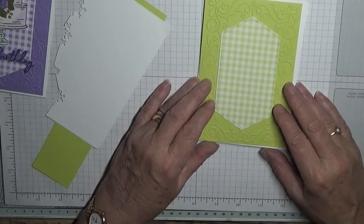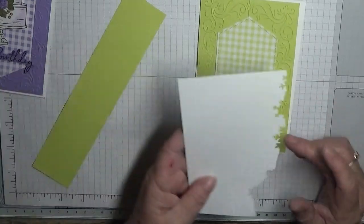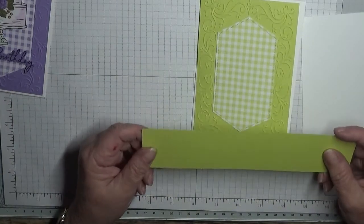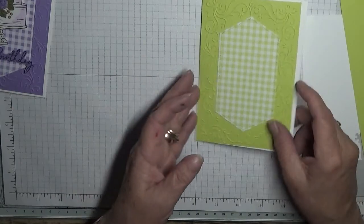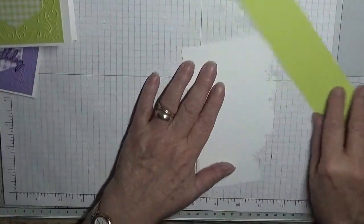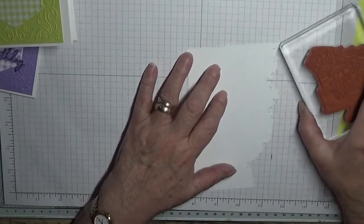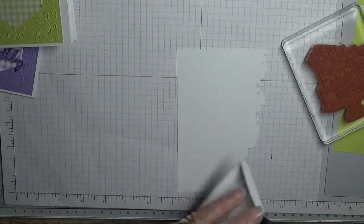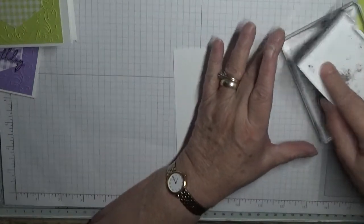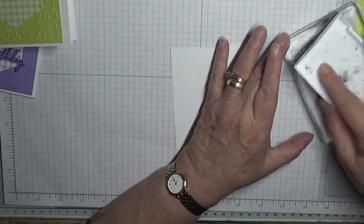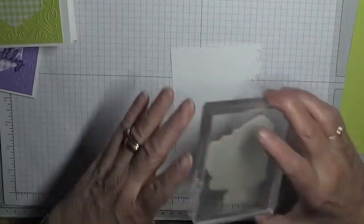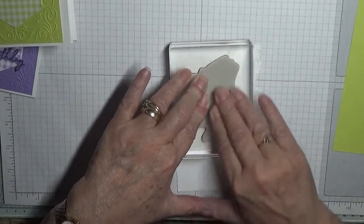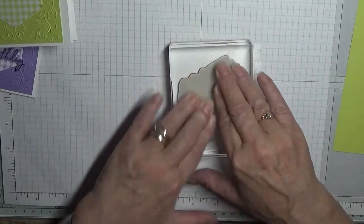We're going to use that. You need a scrap of white for the cake and a scrap of Lemon Lime Twist for the happy birthday. So let's do our stamping first so that we can ink or dry by time we go to color it.